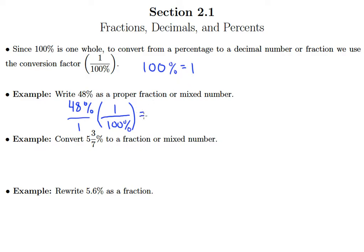By doing this, I can see that my percent symbol will cancel out, leaving me with 48 over 100. So 48% is equivalent to 48 over 100.